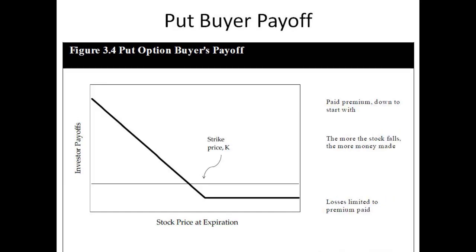A put is the right to sell the underlying. If you buy a put, you have the right to make someone buy the underlying from you at the strike price. The put buyer has paid premium, so if the underlying goes up it's not worth exercising and they take their maximum loss — the premium paid. If the stock price falls, they first hit break even, and then make more and more money. The maximum gain is if the stock price falls to zero.